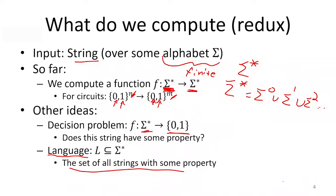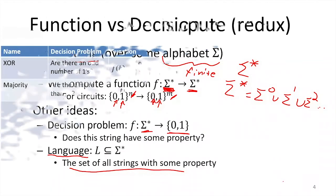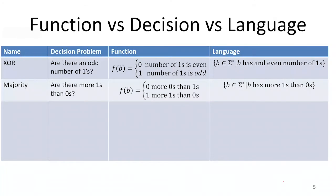All of these things are related to one another: functions, decision problems, languages, and so forth. Any of the things we've discussed so far, we could think about them in any of these contexts and get basically the same properties. For instance, we could look at XOR — the generalized XOR where we can hand it any number of inputs, rather than just two.